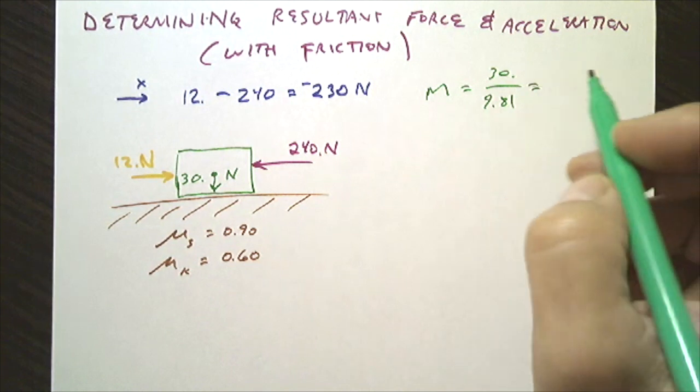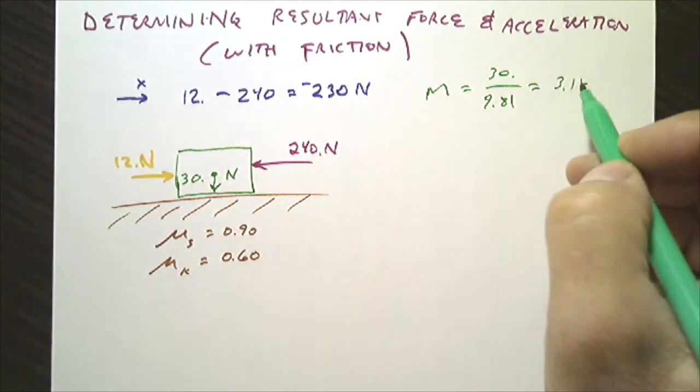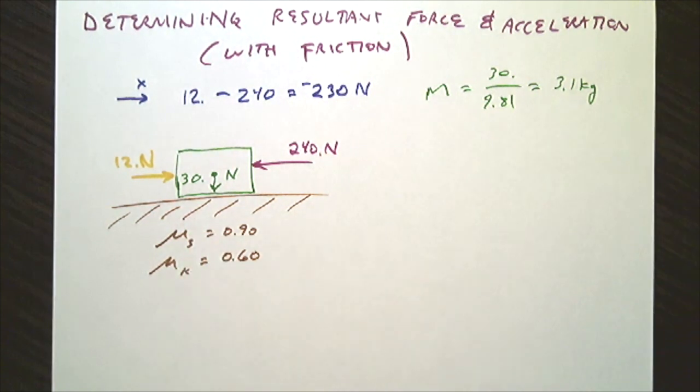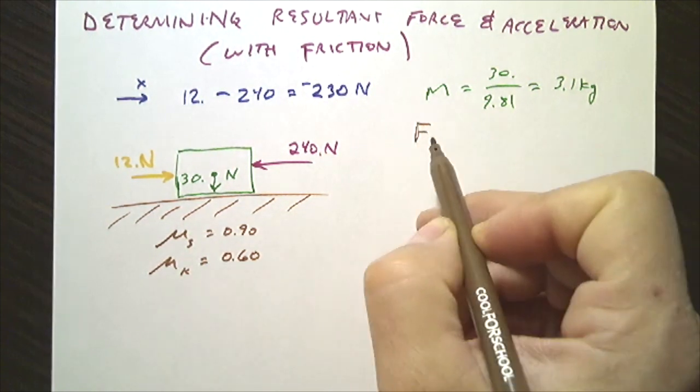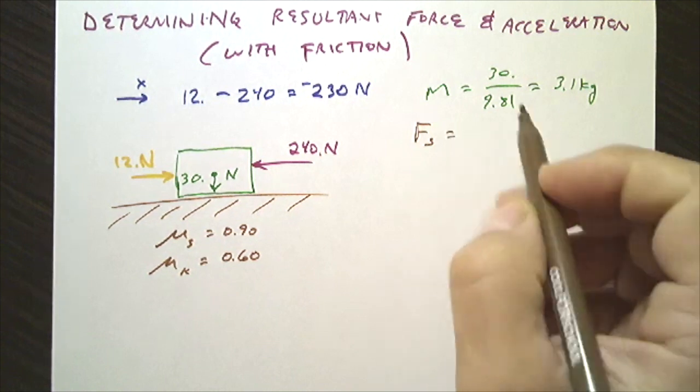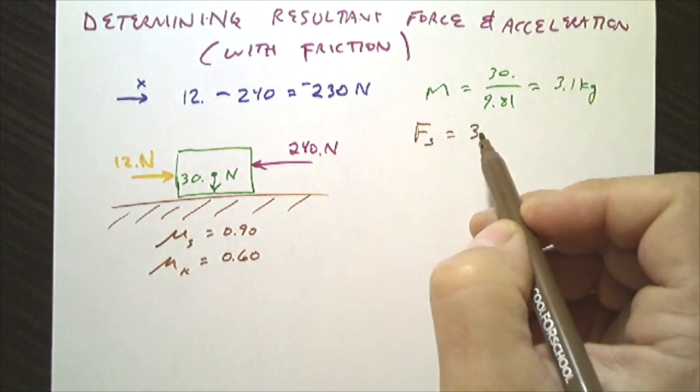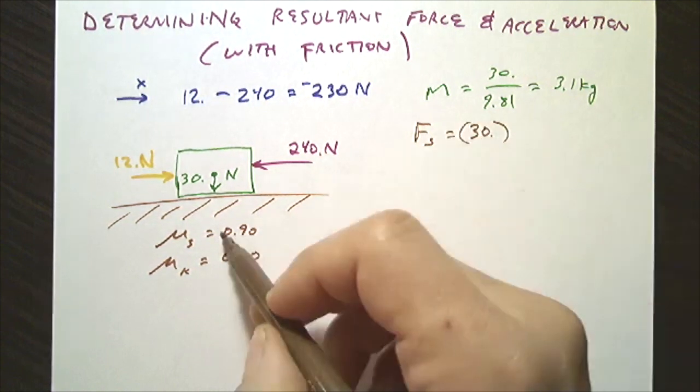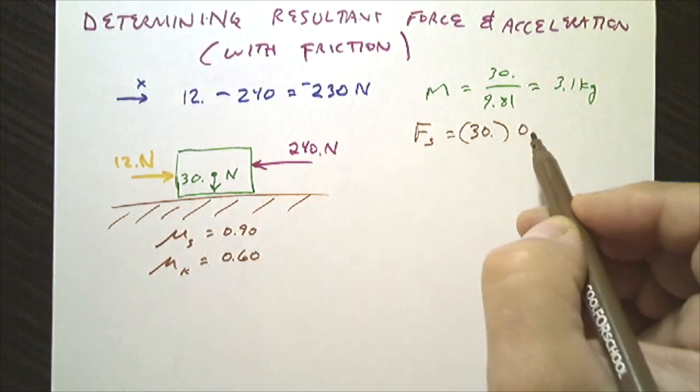So the force of friction, in this case the force of static friction, would be equal to the force of gravity times the coefficient of static friction, which is 0.90. And that gives us 27 newtons.